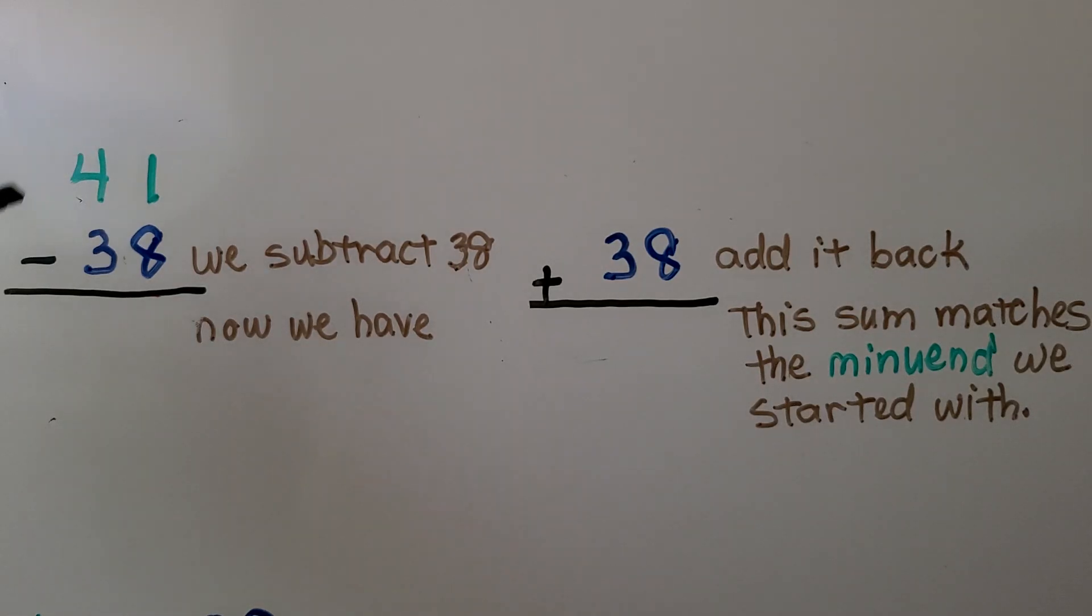Here we have 41 minus 38. We're subtracting 38. We think 38, 39, 40, that's 2, and 1 more would be 3 to get to 41. That means the difference is 3.